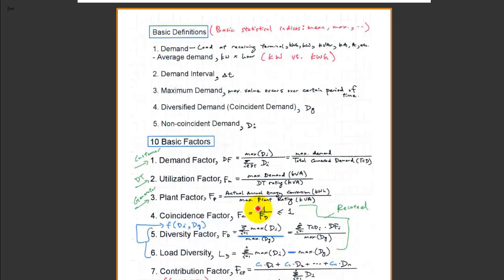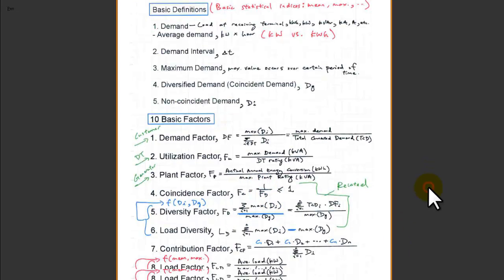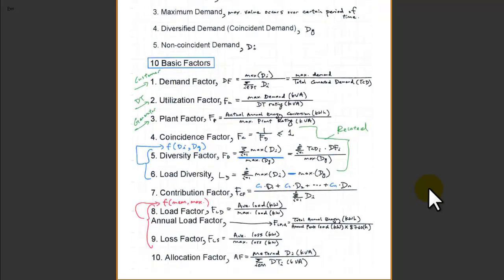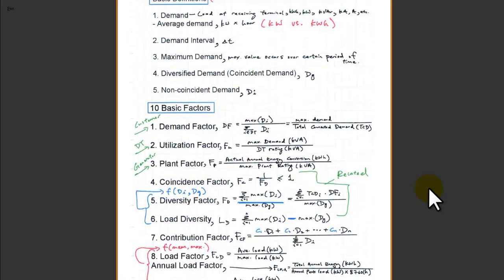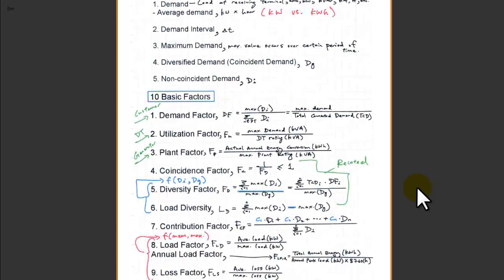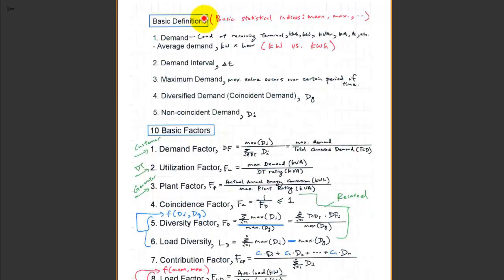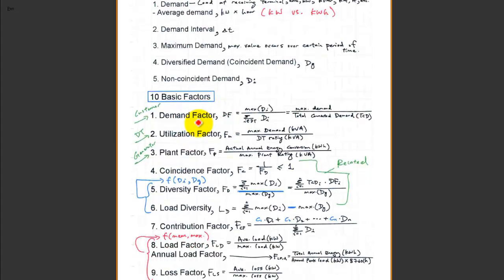I'll give you an overview of what we've covered — this is a good summary for the next exam covering basic definitions of the statistics of demand. There's demand, demand interval, maximum demand, diversified demand (also called coincidental demand, D sub G), and non-coincidental demand D sub I, which is the individual customer demand.